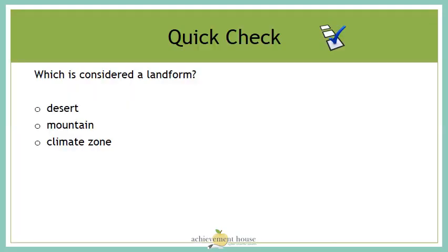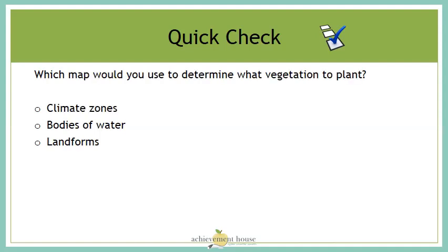Let's do a quick check. Which is considered a landform: desert, mountain, or climate zone? If you said mountain, you'd be correct. Which map would you use to determine what vegetation to plant: climate zones, bodies of water, or landforms? It's kind of a trick question — you'd want to know all these things before you planted crops.